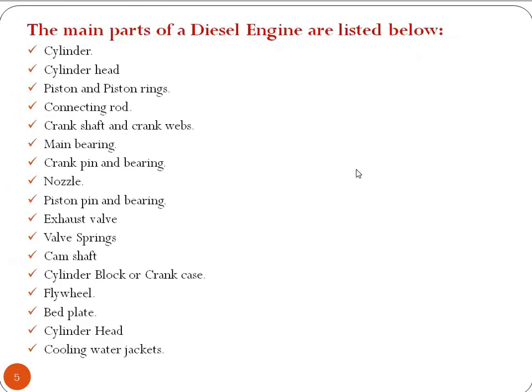Now we will understand the main parts of the diesel engine in detail. These are: the cylinder, cylinder head, piston and piston rings, connecting rod, crankshaft and crank webs, main bearing, crank pin and bearing, nozzle, piston pin and bearing, exhaust valve, valve springs, camshaft, cylinder block or crankcase, flywheel, bed plate, cylinder head, cooling water jackets. All these components can be seen in the schematic diagram.